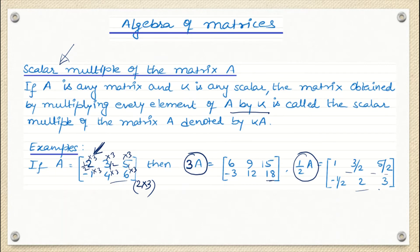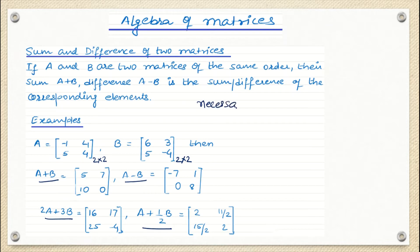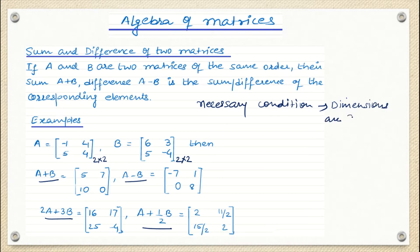Now, addition and subtraction of two matrices — you must be knowing these things, just to brush up. If two matrices A and B are given, both of order two cross two, we have to find A plus B, A minus B, or any combination like 2A plus 3B or A plus half B. But there is a necessary condition: the number of rows and number of columns for each matrix should be the same. The dimensions of both matrices should be the same.